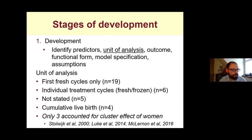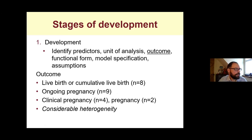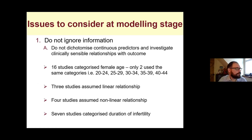Regarding the outcome itself, eight models used live birth or cumulative live birth, nine used ongoing pregnancy, and four looked at clinical pregnancy — so there was considerable heterogeneity in outcomes and how they were defined.